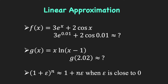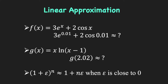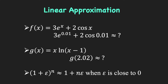In particular, in this video, we're going to estimate the following. For example, how do we approximate this value here using linear approximation? Next, how do we approximate the value of g of 2.02 given that g of x is equal to x times ln of x minus 1? And third, we're going to derive this approximation: 1 plus epsilon quantity raised to n is approximately 1 plus n times epsilon, which is true when epsilon is close to 0.